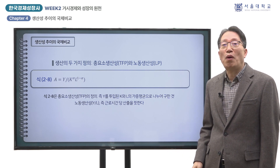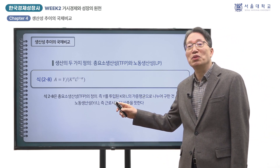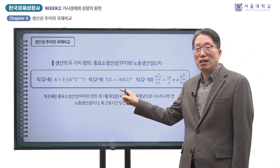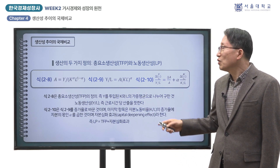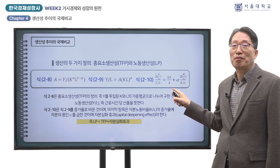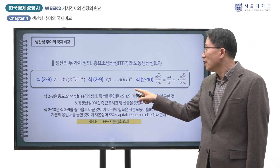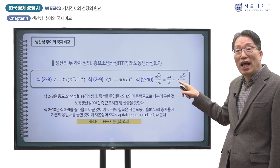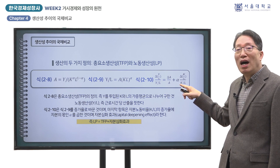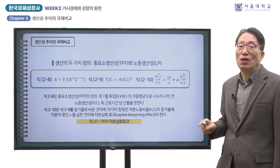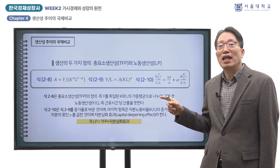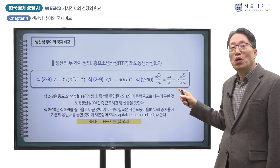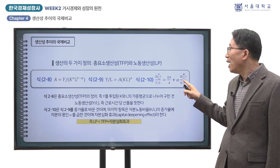노동 생산성 Y/L은 생산함수의 양변을 L로 나누면 식 2-9와 같이 얻을 수 있고, 이를 증가율 산식으로 바꾸면 식 2-10이 됩니다. 즉 노동 생산성 증가율은 TFP 증가율과 자본-노동 비율(K/L) 증가율에 자본의 몫 알파를 곱한 것의 합입니다. 노동 단위당 더 많은 자본을 이용할수록 LP가 높아지는 이 두 번째 항목을 자본 심화 효과라고 합니다.